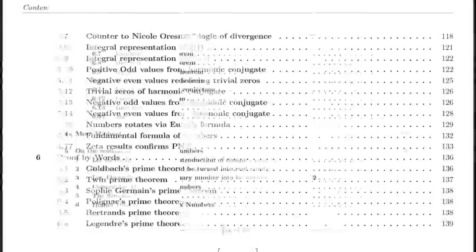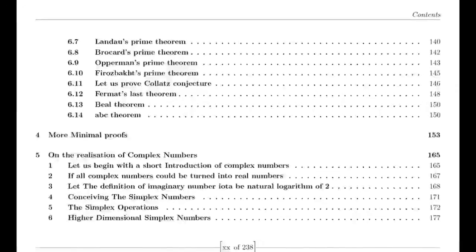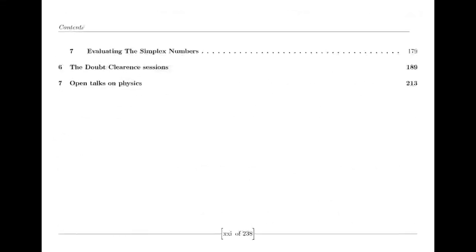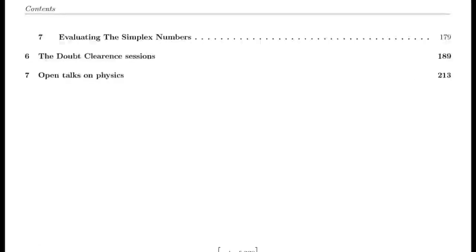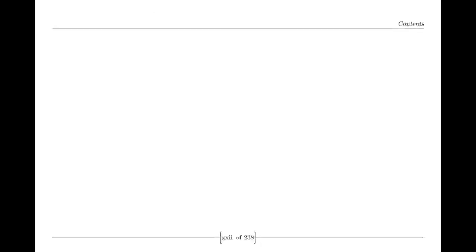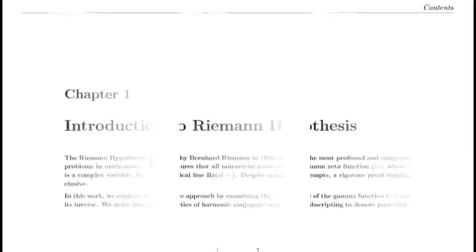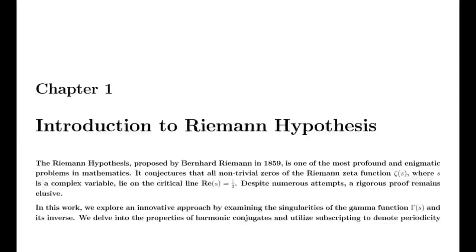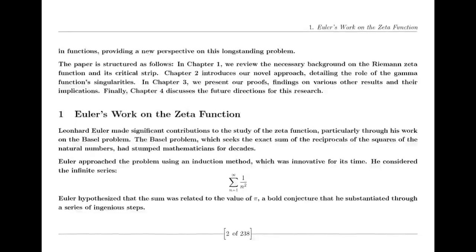Today, the zeta function stands as a symbol of mathematical beauty, its zeros a haunting enigma that continues to inspire generations of mathematicians. The questions raised by Riemann's conjectures echo through time, urging us to look deeper into the fabric of numbers, reminding us that in the pursuit of knowledge, some mysteries may never be fully unraveled, yet they drive us forward into the realms of discovery. And so, the story of the zeta function continues, a testament to the endless curiosity and creativity of the human mind, forever seeking the patterns hidden within the numbers.